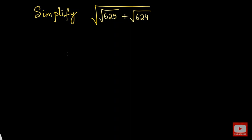Hello everyone. In this video we are going to simplify this given expression. We have square root of 625 plus square root of 624, that is under the big square root.